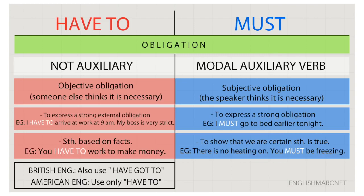But how do we use them? First of all, in the 'have to' column, in the white rectangle, we have 'not auxiliary.' That's right — 'have to' is not an auxiliary. Instead, 'must' is a modal auxiliary verb. It's an auxiliary because it needs another verb next to it, otherwise it doesn't mean anything.